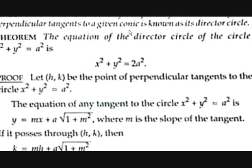A conic means the curves derived from a cone: circle, parabola, ellipse, and hyperbola. A circle is a conic obtained by cutting the cone horizontally. Cutting at an angle gives an ellipse, cutting at another angle gives a parabola, and cutting vertically gives a hyperbola.